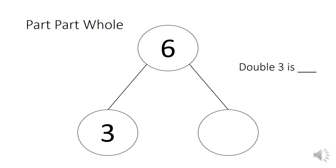This time in my part-part-whole, I have a different circle missing. This circle and the answer have been completed, but this circle down here is missing a number. What number do I put in that circle? It is number three — because we're making two groups of that number. Then I complete the sentence: double three is six, and the answer is already there for us.